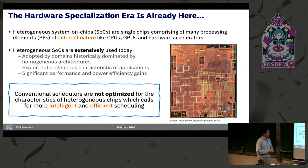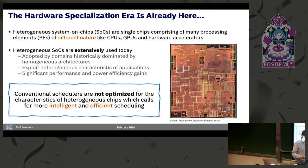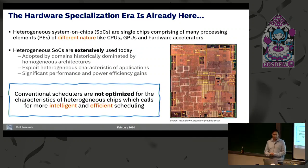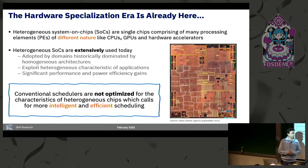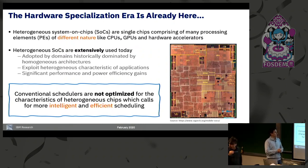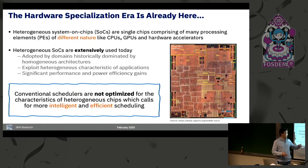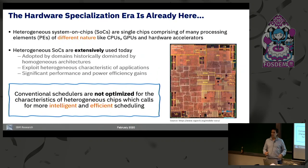The question is: how do we schedule applications, processes, and threads on this kind of heterogeneous chip? It's not straightforward because conventional schedulers, like the Linux scheduler, are not optimized to exploit the characteristics of heterogeneous chips. We think there is a need — a call — to think harder about creating more intelligent and efficient schedulers for heterogeneous chips.